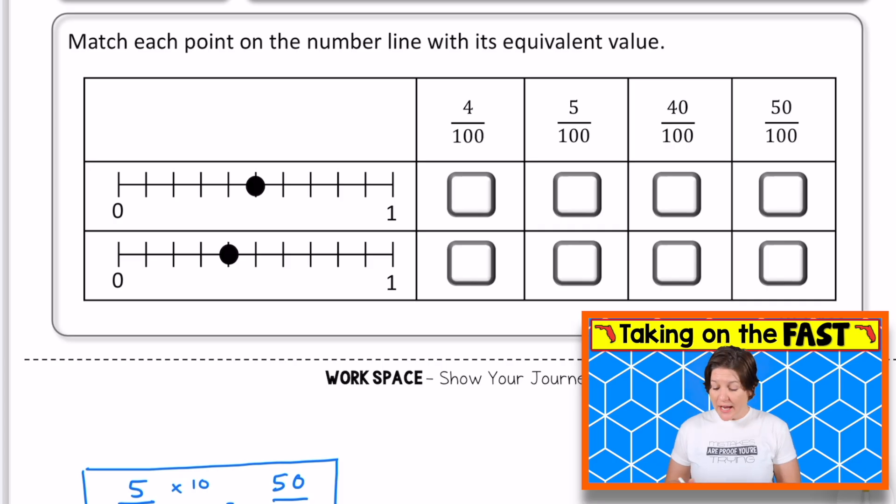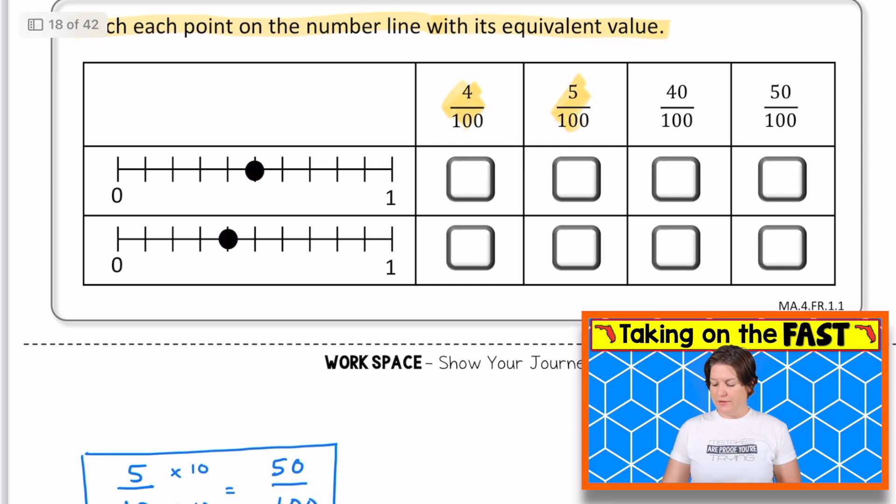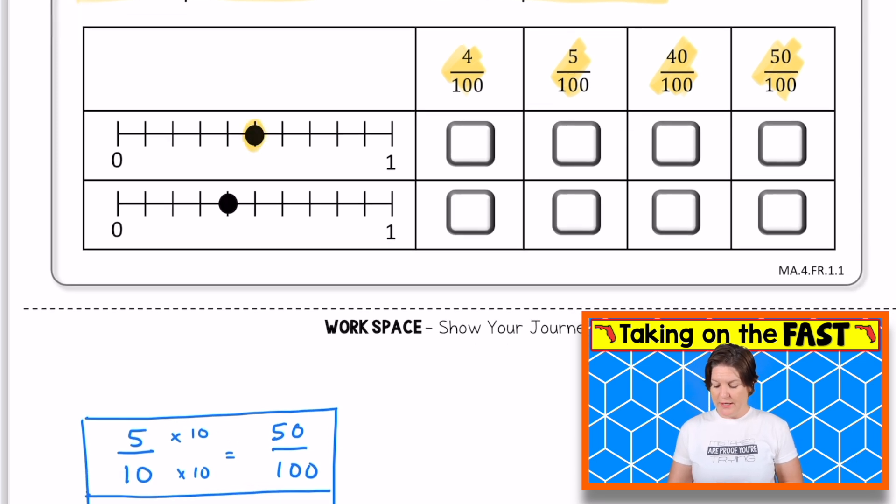Pause the video to jot down any notes that you still need to make. And when you're ready, press play. Next up, we have a matching item problem. And this question says to match each point on the number line with its equivalent or equal value. Okay, so we've got some number lines, and I can see it's either 4 hundredths, 5 hundredths, 40 hundredths, or 50 hundredths. For this first one right here, I said, okay, I know that that fraction represents 5 tenths because it's on the fifth hop out of 10 total, but I don't have an option for 5 tenths. So I must need to create an equivalent fraction. So I multiplied both the numerator and the denominator by 10 to get 50 hundredths. So for that one, we'll go ahead and click 50 hundredths.